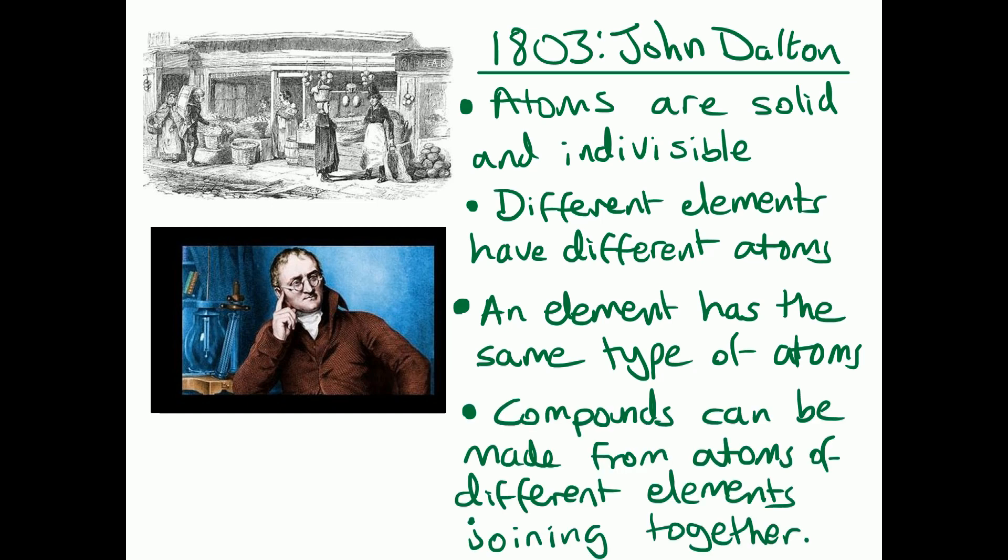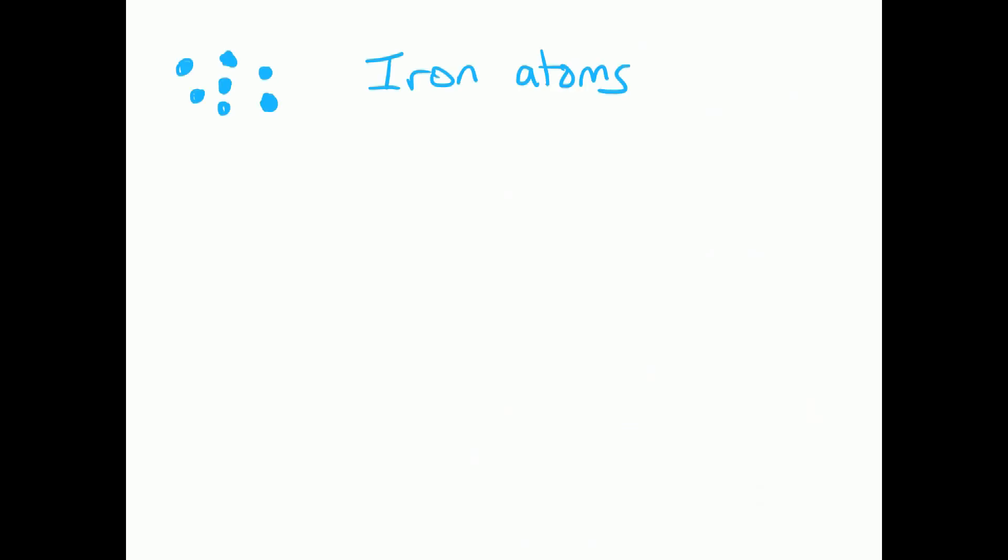As well as that, he also said that compounds can be made from atoms of different elements joining together. So if we try and represent John Dalton's ideas as a diagram, we can see here that in a piece of iron the atoms would all be the same type. We can see if we had some sulfur the atoms would be different to the iron atoms, but within that piece of sulfur the atoms are all the same. So we've got two different chemical elements there with different atoms. If we join those elements together to make a compound, we can see how a compound is made by joining together two or more different types of atom.